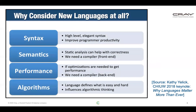We're not the only ones who think new languages are worthwhile. This is a slide from a keynote that Kathy Yellick from Berkeley gave at our annual workshop in 2018, arguing that languages matter more than ever due to architectural changes. She pointed out four things languages can give you: better syntax, better semantics and checks, better performance through compiler optimization, and the ability to write better algorithms because languages influence the way we think.